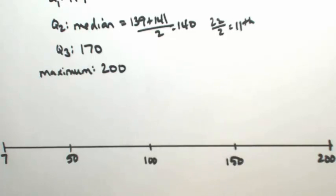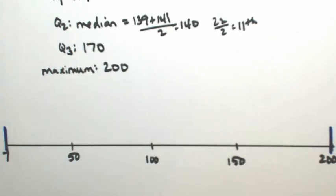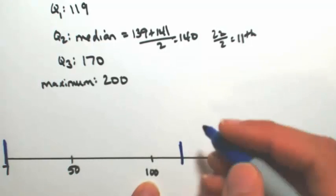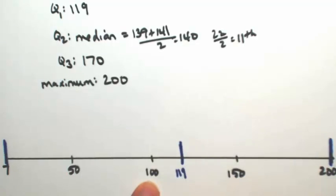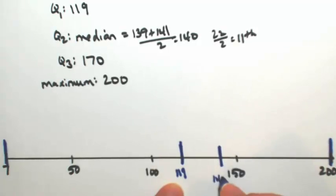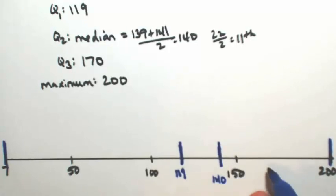Let's mark out where these numbers are. I'm going to use a different color so you can see. Starting with 7 and 200—got the min and the max. Q1 is 119. Here's my 100, halfway between would be about 125, so 119 is about there. Q2 is 140, and then Q3 is 170.